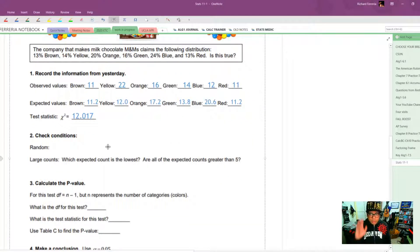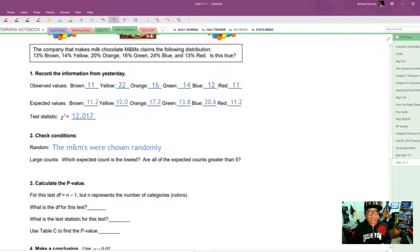Next, check the conditions. There are only two conditions to check. We talked about this yesterday. The first one is the random condition. Like always, we want to infuse this with context. So the M&Ms were chosen randomly. Next, we have large counts. And this guarantees that we can actually use the chi-square distribution. So large counts, we just have to make sure that all of the expected counts are greater than 5. And as we can see, all the expected counts are greater than 5. On the AP test, or when you're writing this down, I would definitely leave something like CLIST above. So it would be obvious where to look to verify visually that all of the expected counts are greater than 5.